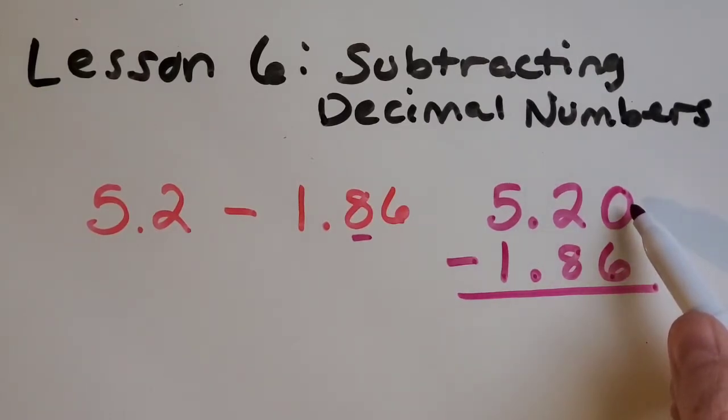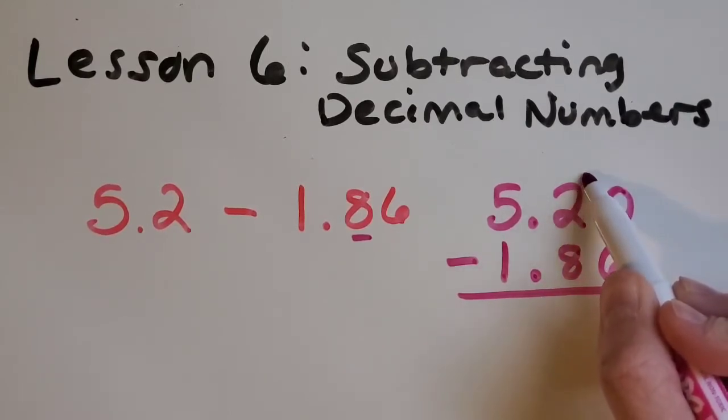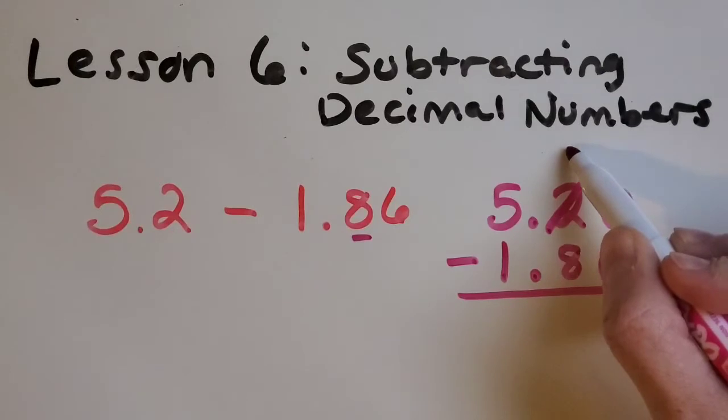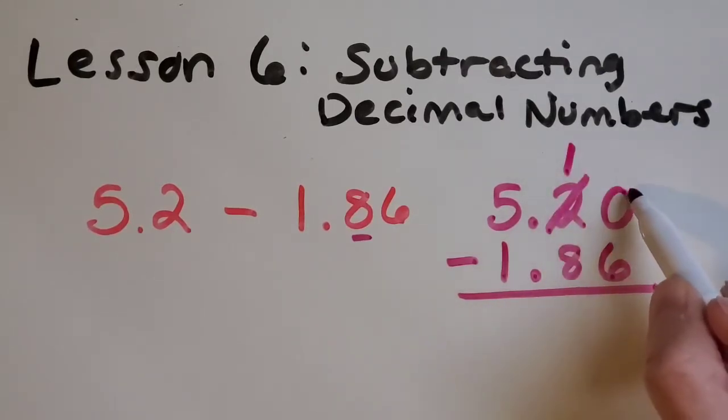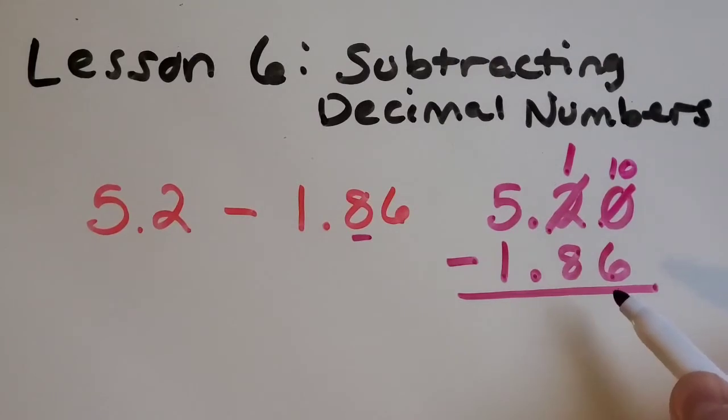I can already see that when I'm doing zero hundredths minus six hundredths, I'm going to need to regroup. So I'm going to take a tenth and break it up into ten more hundredths. Now I can subtract my hundredths. Ten minus six is four.